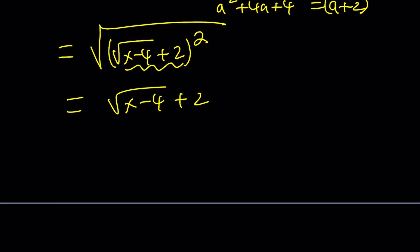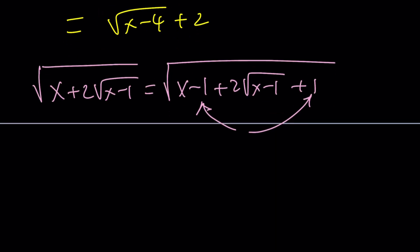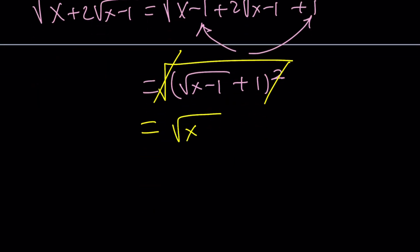Make sense? So by the same token, if you have square root of x plus 2 times the square root of x minus 1, you can go ahead and write it as the square root of x minus 1 plus 2 times the square root of x minus 1 plus 1. Notice that negative 1 plus 1 is 0. So we're in good shape. But this expression becomes the square root of x minus 1 plus 1 quantity squared. And then we have to square root it, which means the square and the square root are going to cancel out.